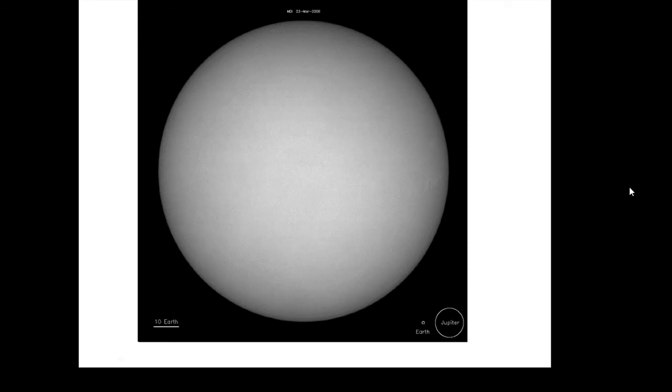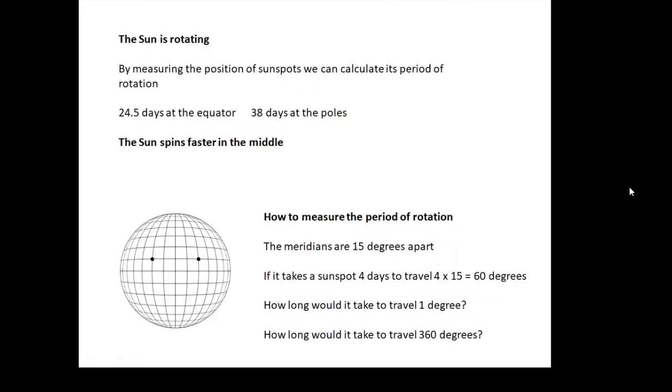This is actually one of the bits of coursework you can do if you have a solar scope. If you can look at the sunspots on the surface, what you can actually work out by taking measurements off these pictures is you can work out the period of rotation of the sun. The sun is rotating and by measuring the position of sunspots we can work out its period.